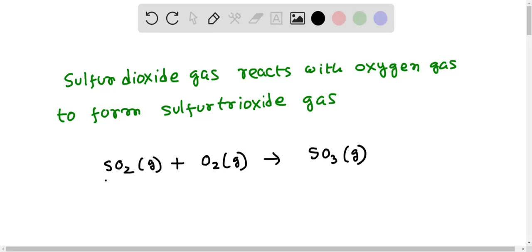We have one atom of sulfur on both sides of the equation, but on the reactant side we have four oxygen atoms, and on the product side we have only three oxygen atoms.